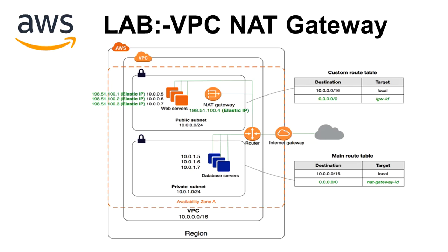But if we want the private subnet to connect to the internet, what feature will we use? That is the NAT gateway. We will create a NAT gateway in the public subnet. We will also create an EC2 instance on the public subnet, access it remotely, and then communicate with the internet after creating the NAT gateway.